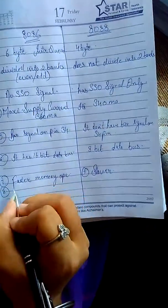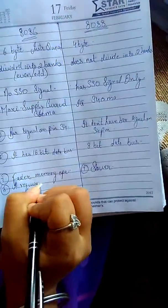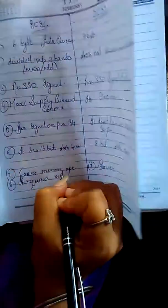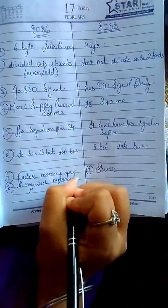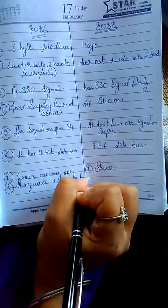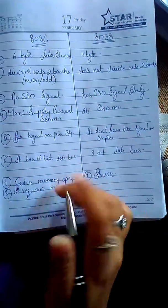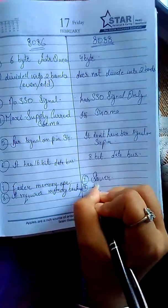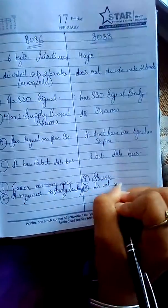The 8086 requires memory banking because it has a 16-bit data bus, while the 8088 does not require memory banking.